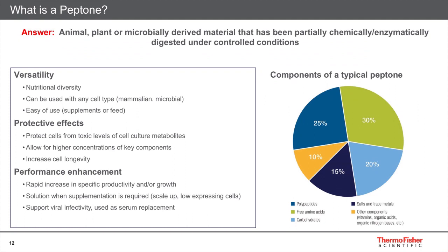Screening of different peptones is recommended to identify the needs of your particular organism. For example, aerobes and anaerobes have different nutritional preferences based on their oxygenation requirements. By trying peptones with different nutritional profiles, you can find the best fit for your microbial culture process.